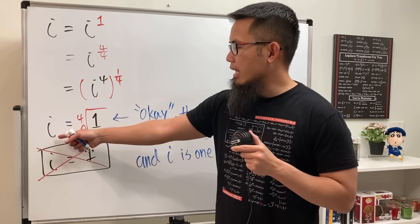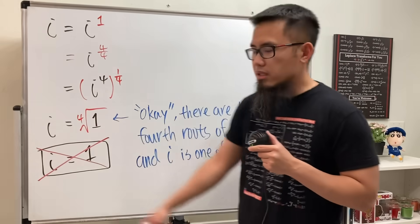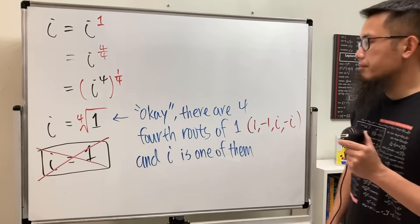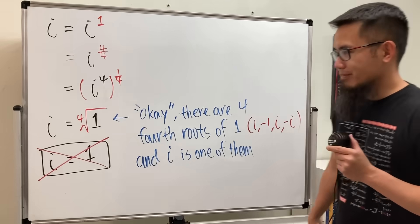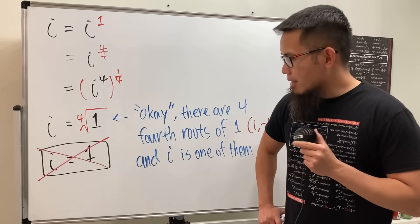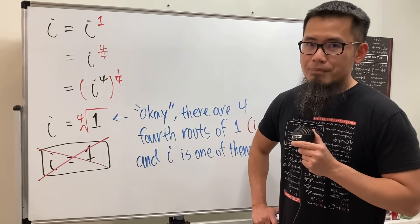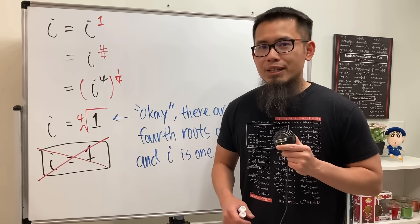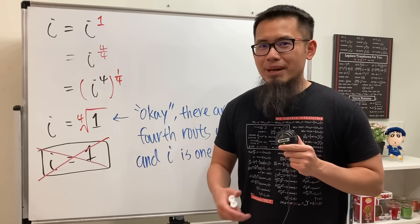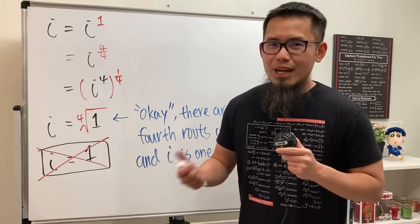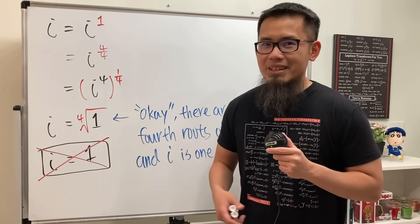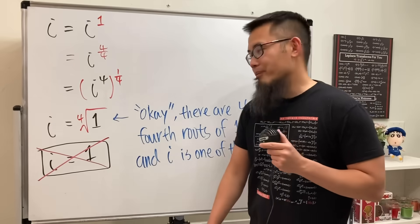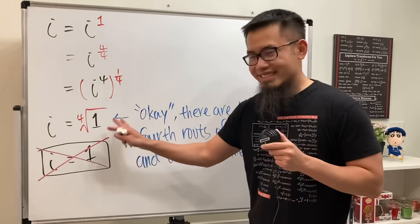If you say the 4th root of 1 is equal to I, you only put down one possibility. How about the other 3? This is like saying I'm going to treat you to a 4-course meal tonight, but in the end I'm just buying you the soup and you have to pay for the entrée, dessert, the drink, the second course, and things like that. How would you feel?